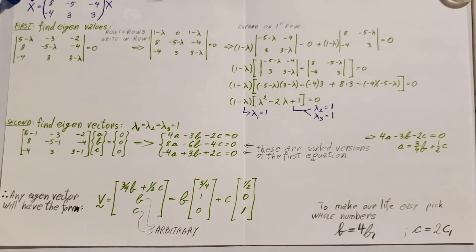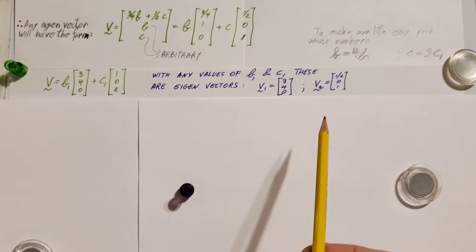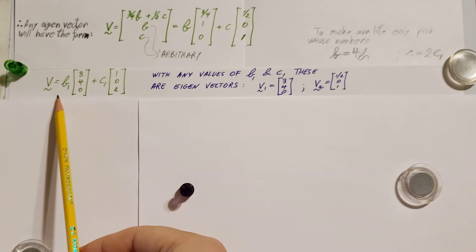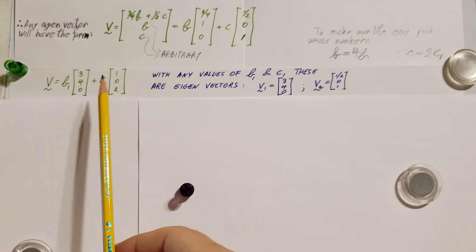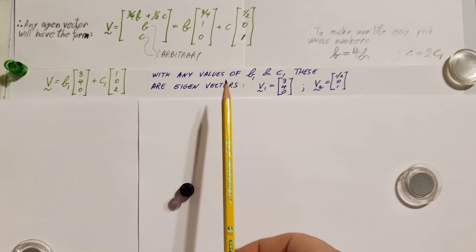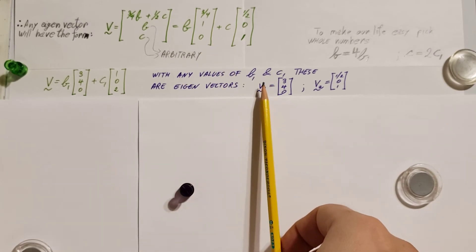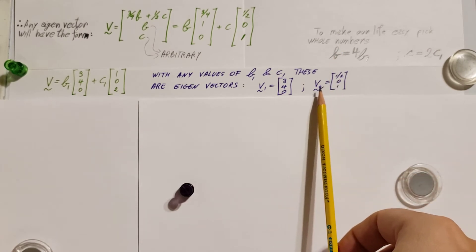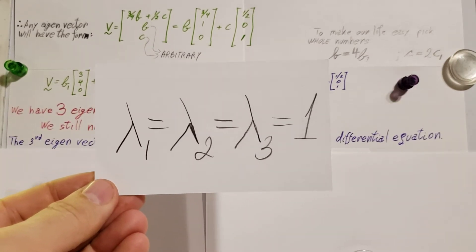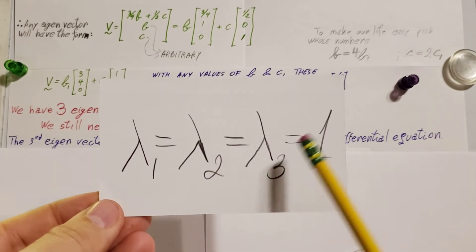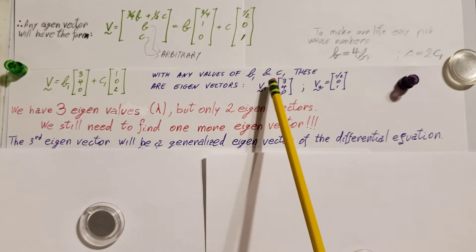For C, you put a one. Just to make our life easier so we don't have to write fractions, we can call B equals 4B1 and C equals 2C1. This allows us to rewrite so that B1 gives us a nice vector of (3, 4, 0), and C1 gives us (1, 0, 2). With any values for B1 and C1, these are the eigenvectors we have found. My first eigenvector is (3, 4, 0), and my second eigenvector is (1/2, 0, 1). We have three eigenvalues — lambda 1, 2, 3 all equal to one — but we have only two eigenvectors.